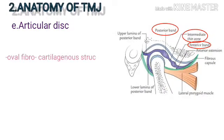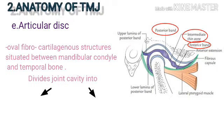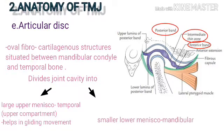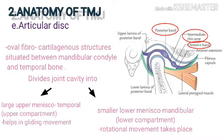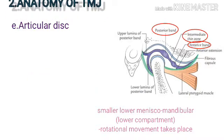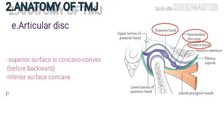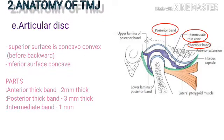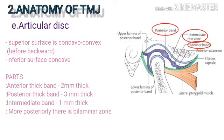The articular disc is an oval fibrocartilaginous structure situated between the mandibular condyle and the temporal bone. It divides the joint cavity into a large upper meniscotemporal compartment — which helps in gliding motion — and a small lower meniscomandibular compartment — where rotational movement takes place. The superior surface is concavo-convex, while the inferior surface is concave. Its parts include an anterior thick band, a posterior thick band, and an intermediate band.